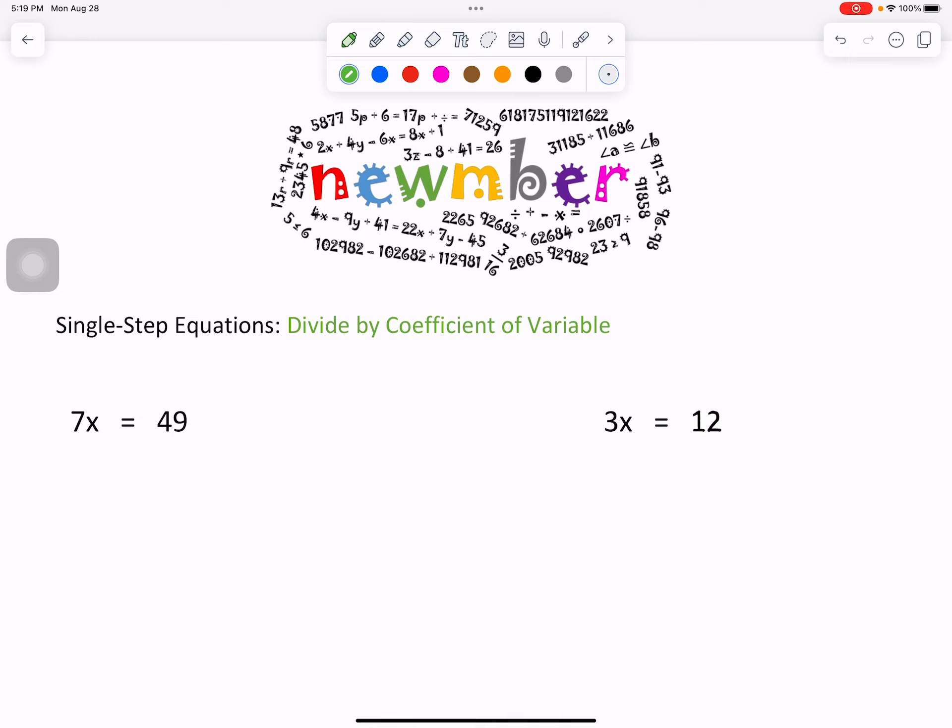Today, we will be working with single-step or one-step equations, and our step includes divide by coefficient of variable. The variable is x. It's just a letter that represents a number because that number may vary.